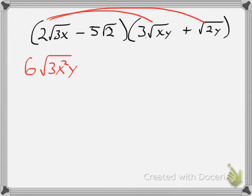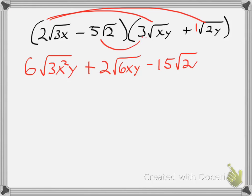Next I multiply, continuing my FOIL method, outer: so 2 square root of 3x times square root of 2y. Since there's only a 1 out in front of this radical, we'll just keep it as 2, hence 2 times 1. Inside I'll have 3x times 2y, so I'll have 6xy. Inner will be the negative 5 root 2 times 3 root xy, which will give me a negative 15 — 5 times the 3 — square root of 2xy.